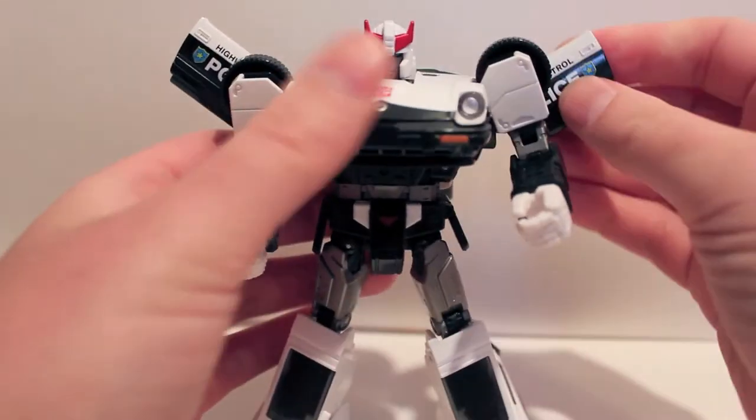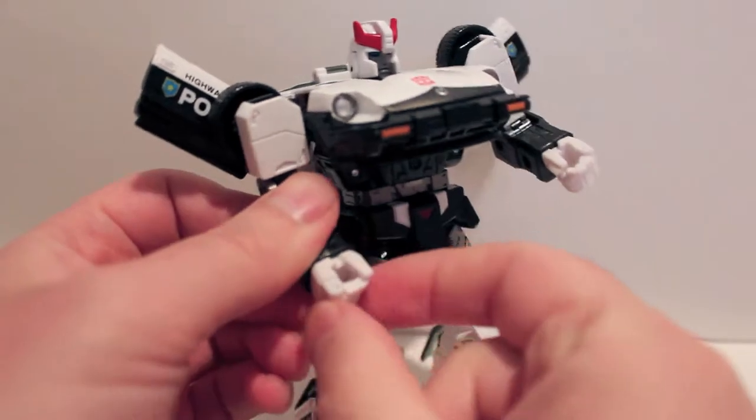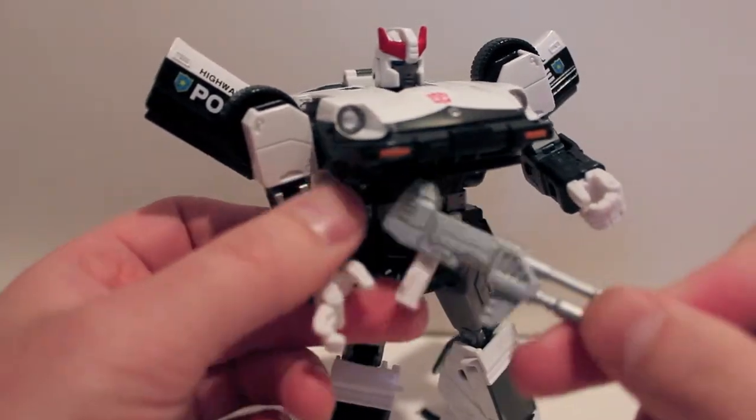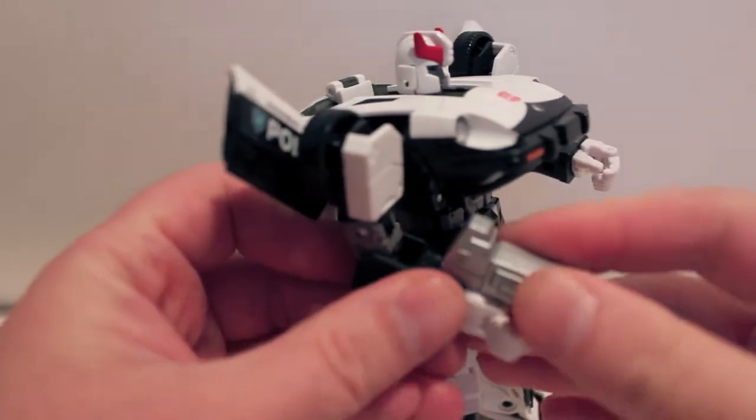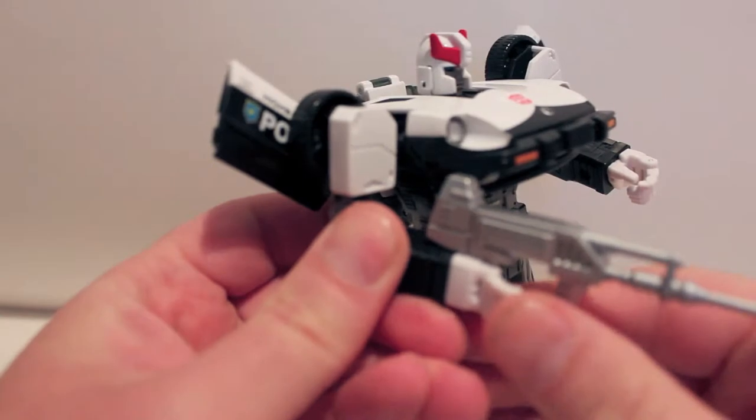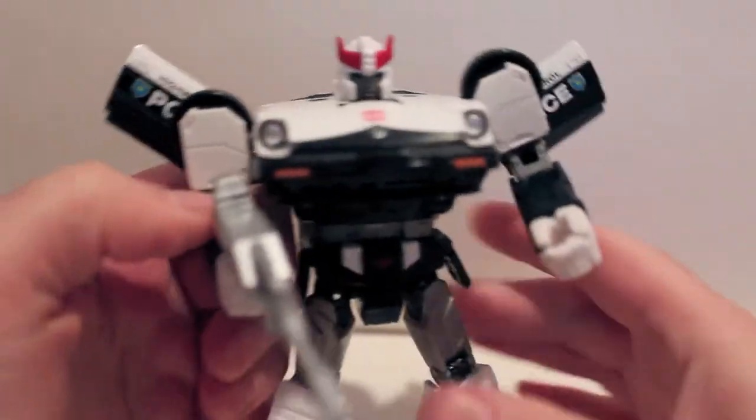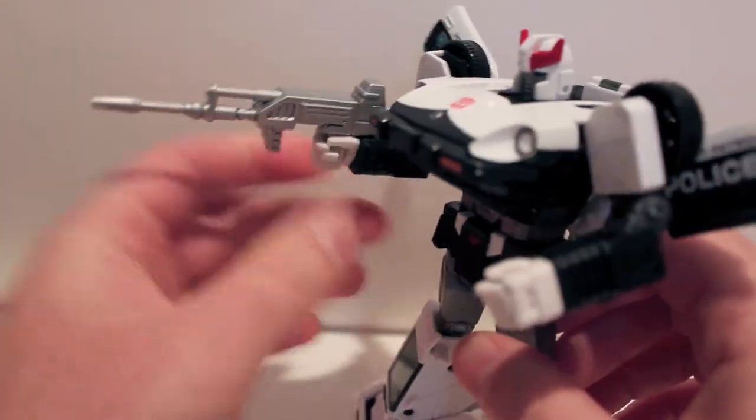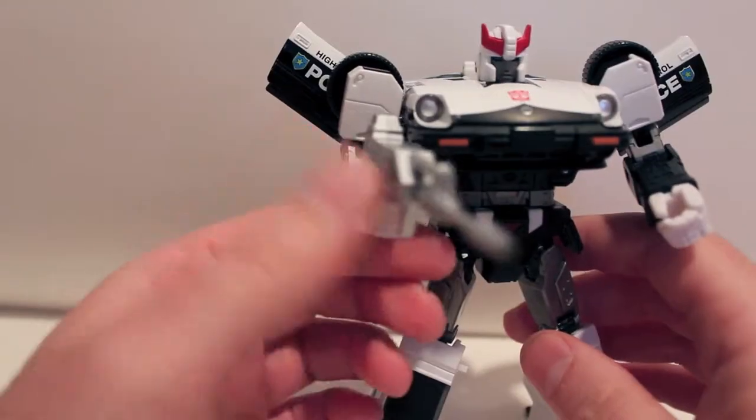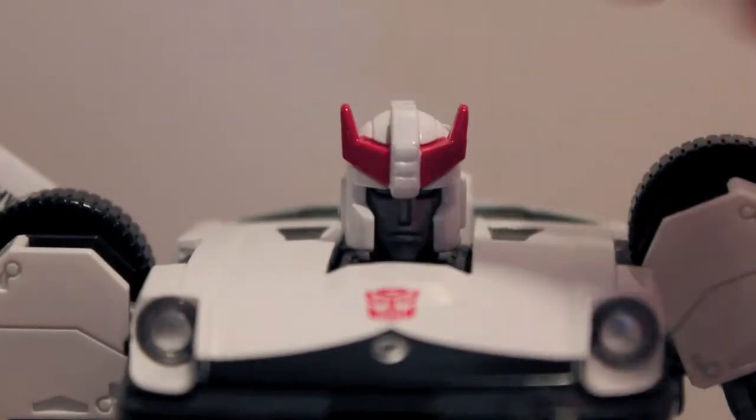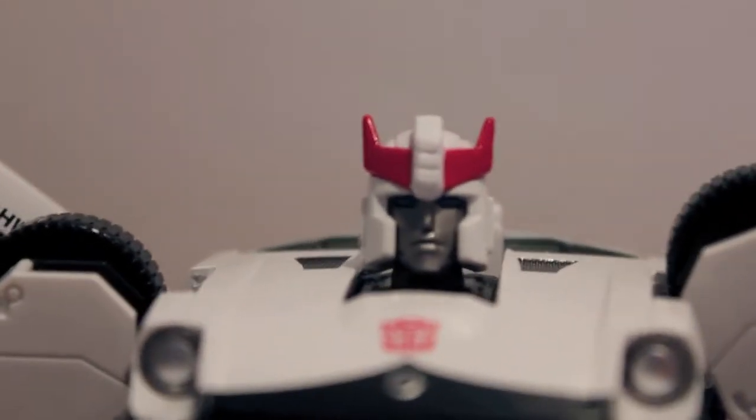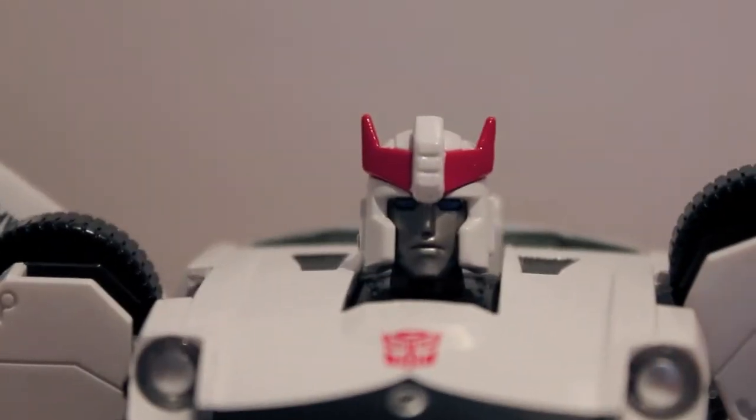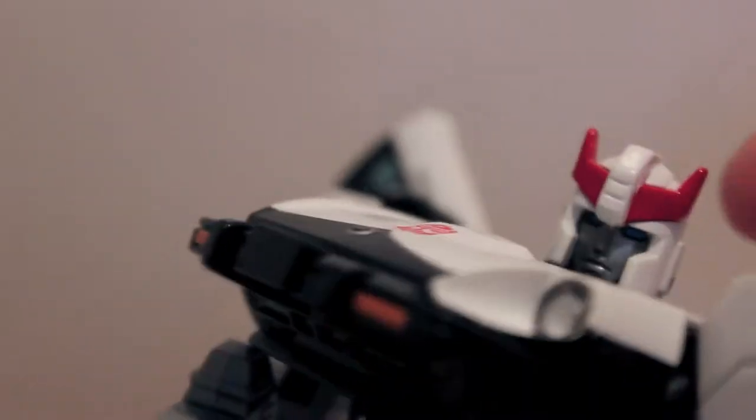So for the gun, open up his hand. Very similar to all the other ones, there's a cut on the handle and it just slots in, and you close his fist around it like so. So yeah, there he is holding it, very awesome. He does probably have the best head sculpt of any Masterpiece, maybe even any Transformer. I mean that's just awesome looking. Totally represents, totally recreates G1 Prowl.